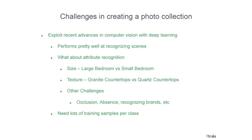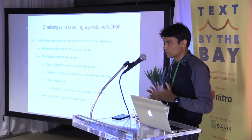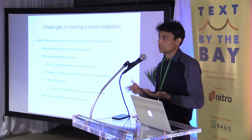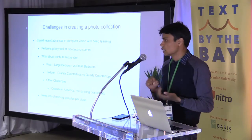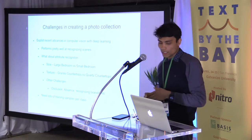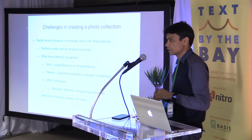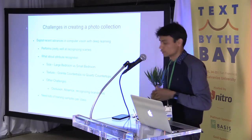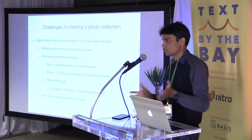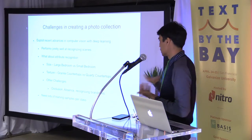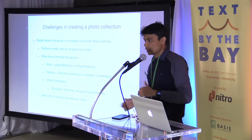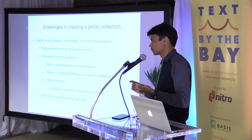We know deep learning is really getting momentum and breaking many benchmarks. So why can't we use that? Using convolutional networks, you can do pretty well in recognizing scenes and objects — but what about attribute recognition? Identifying a kitchen is easy, but identifying finer-grained information within that kitchen — for example, granite countertops — is harder. Is it a large bedroom or a small bedroom? What is the texture of the countertop, given the image was taken from a certain perspective where texture is not visible? Texture is a very fine attribute of any surface, and it is affected a lot by the perspective, lighting, and brightness — so a hardwood floor can look like a concrete floor to a machine learning algorithm under certain conditions.